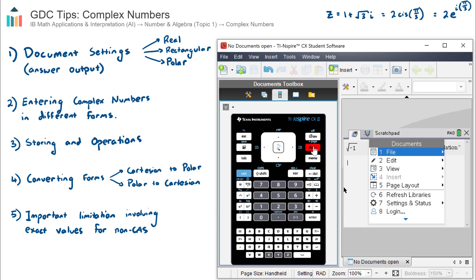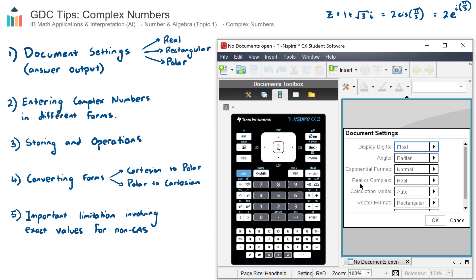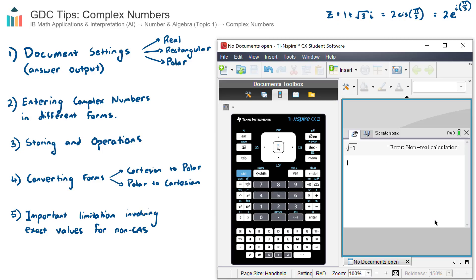So if I go into document, number seven, settings and status, number two, document settings, and I go down to this real or complex, and I change this to rectangular, and by rectangular we mean Cartesian, and if I do the same input, so square root of negative one, I will get my output, which is i, which is the imaginary number i.